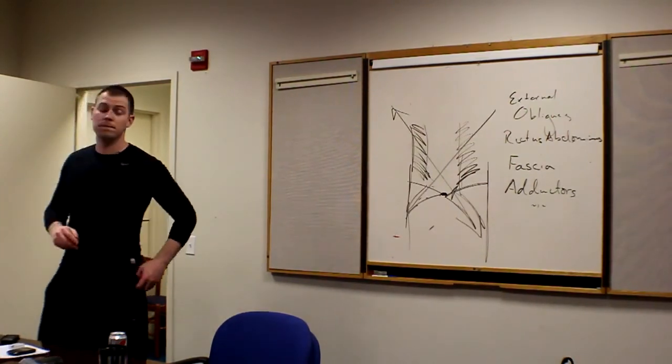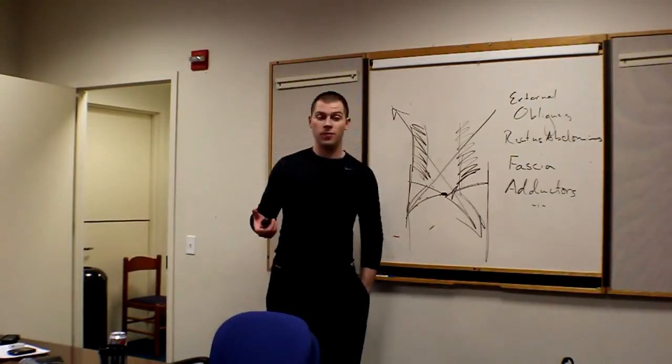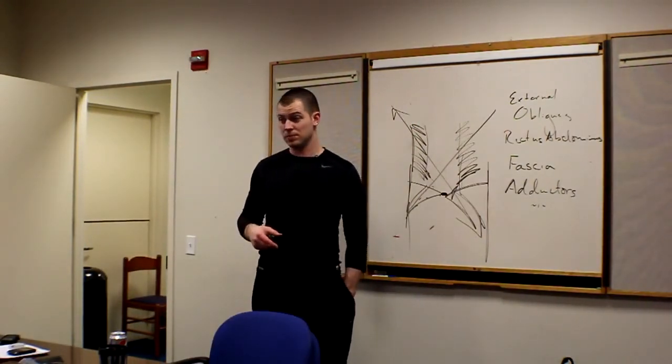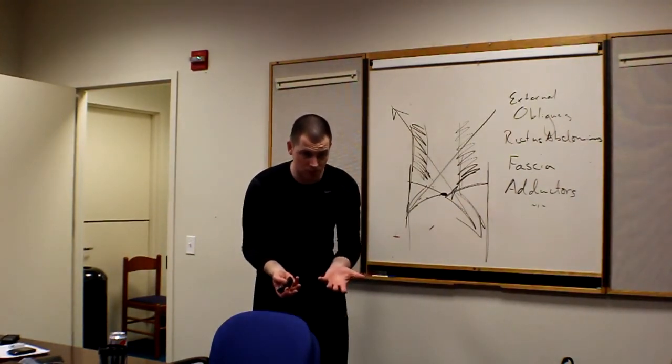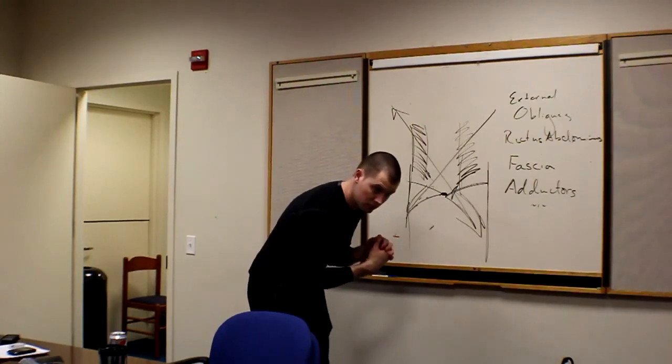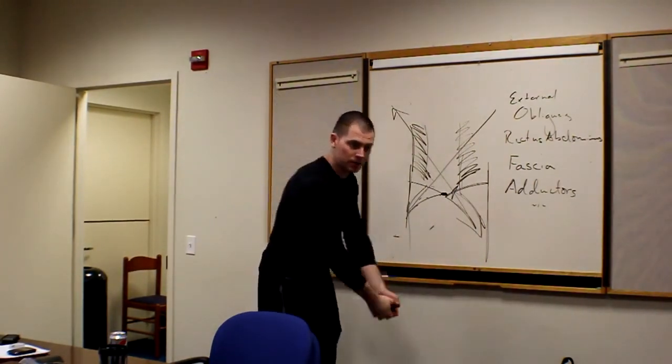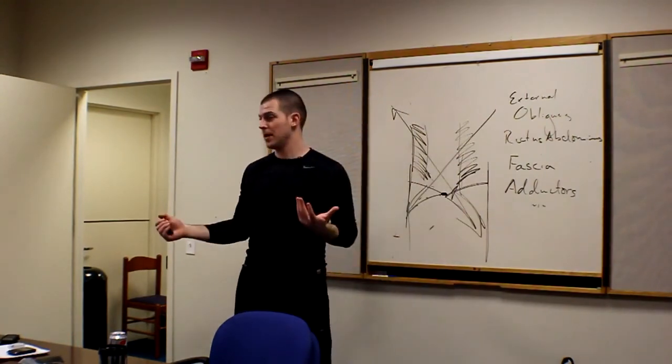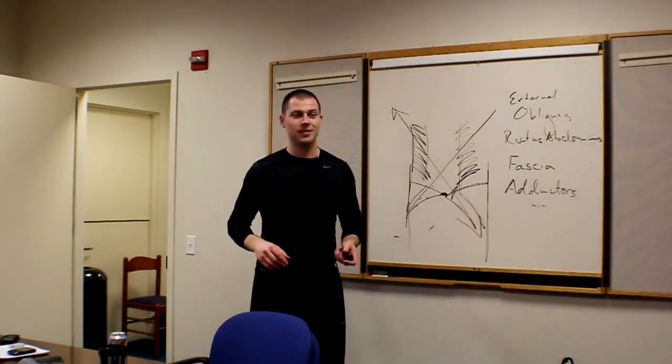So, if you look at this, the function of this subsystem, collapse forward, right? To turn in. This way. Like an ax chop. You guys ever do the chop pattern? With a cable or a band or something? Anterior oblique subsystem work. Now, you can sound fast, too.